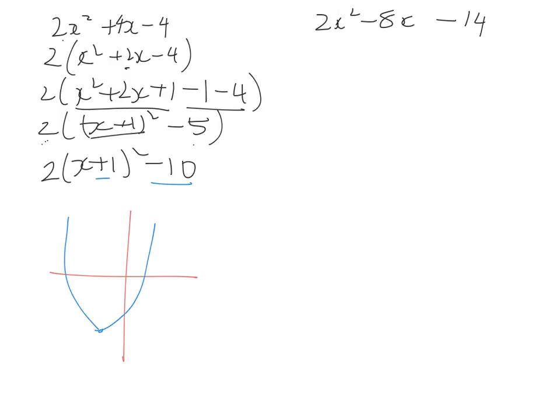Okay, on to the next one. We've got 2x squared minus 8x minus 14. Like before, 2 is our common factor. So this is what we're going to take out. So 2, we're left with x squared minus 4x minus 7.